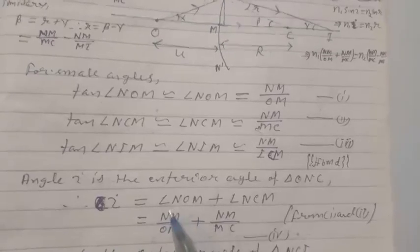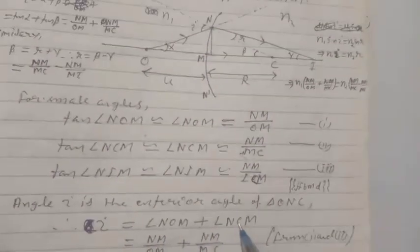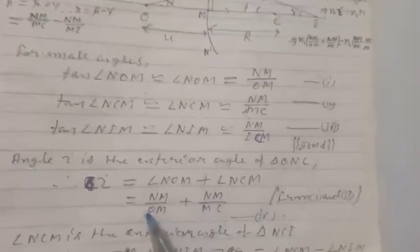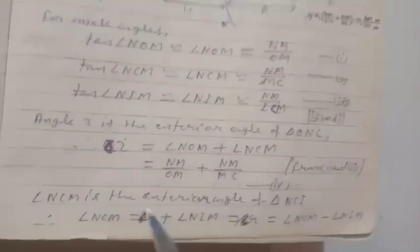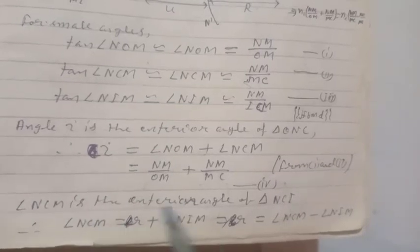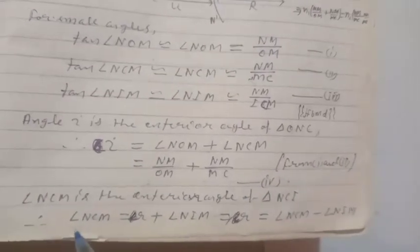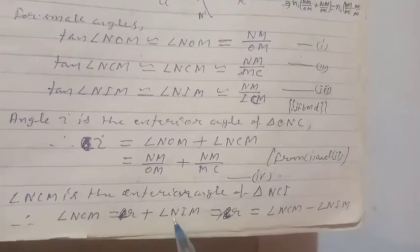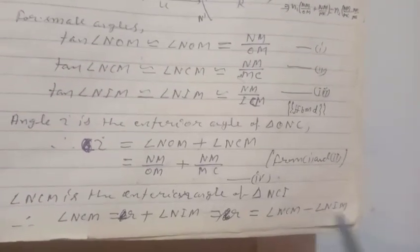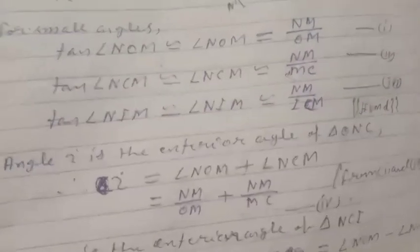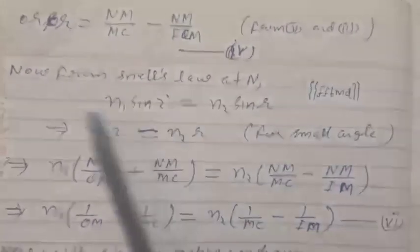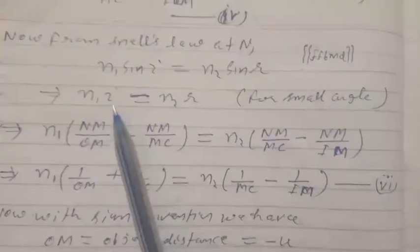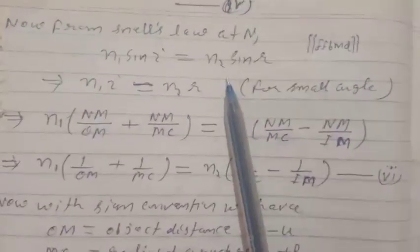So i equals angle NOM plus NCM, which equals NM/OM plus NM/MC. NCM is the exterior angle of triangle NCI, so NCM equals r plus NIM, giving r equals NCM minus NIM, or r equals NM/MC minus NM/MI. From Snell's law with small-angle approximation, n1·i equals n2·r.